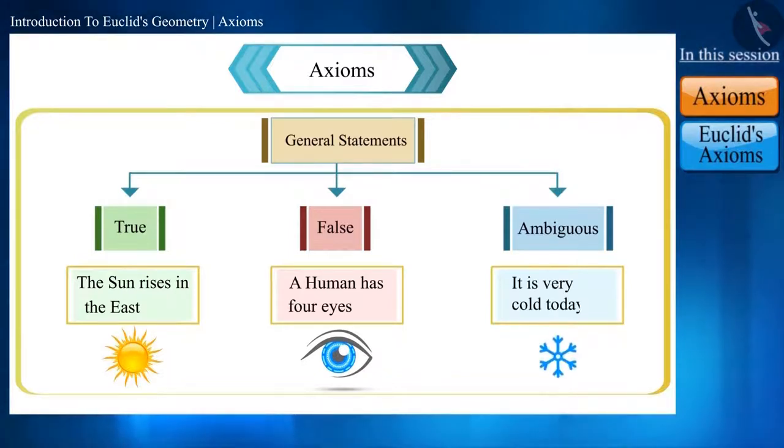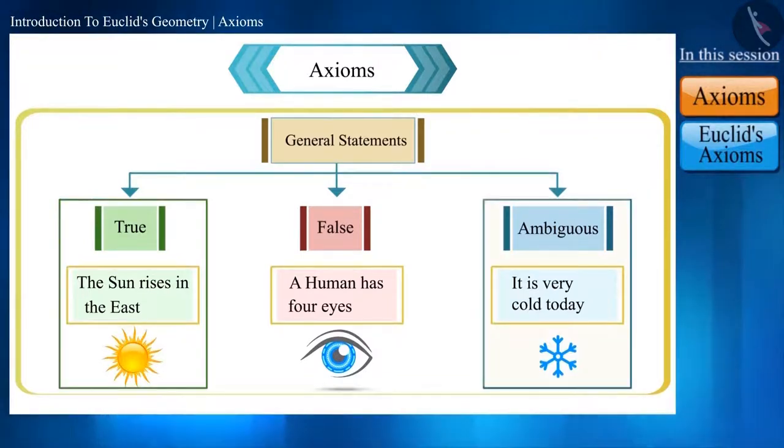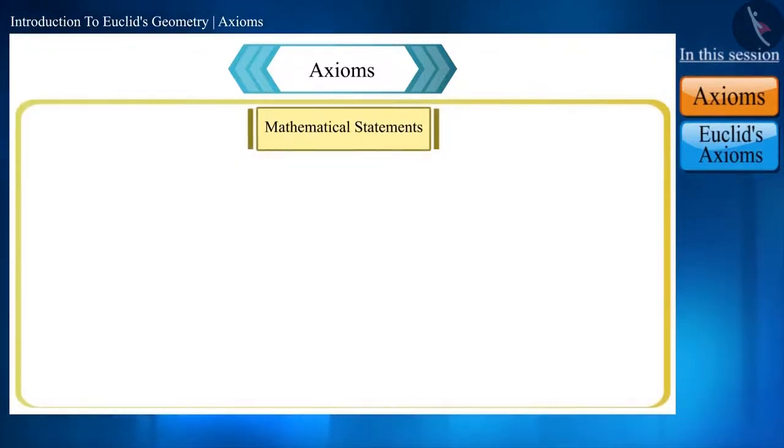And the third one is ambiguous - that is a sentence that depends upon something, such as this statement: 'it is very cold today'. It is possible that there may be someone who is not feeling cold or may be at some place where it is not cold. Therefore this statement cannot be classified as true or false.